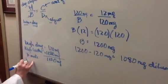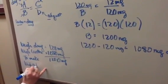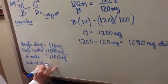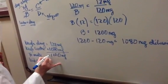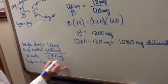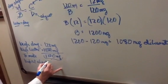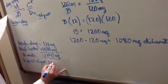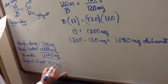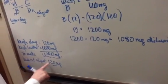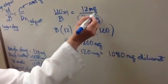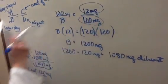So now I weigh out my aliquot, which is that small portion of this, which is going to contain the amount of drug I needed. Which, from up here, my aliquot is 120 milligrams - it's going to contain my 12 milligrams.